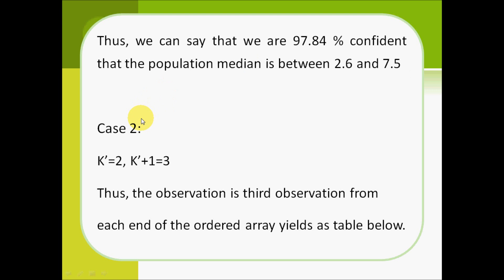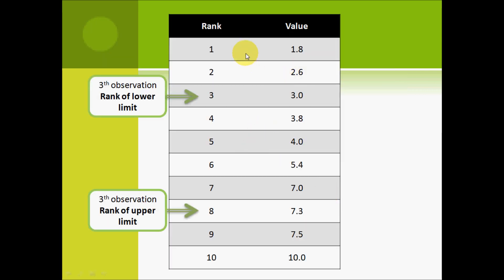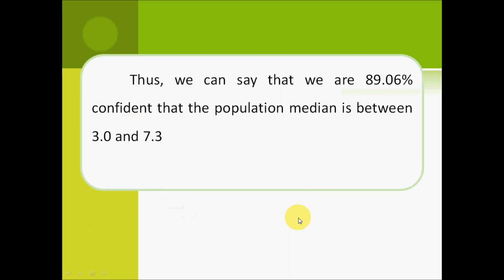For case 2, where k' equals 2, k' plus 1 equals 3. The third observation from each end of the order array is used. The third observation gives the rank of the lower limit, where the value is 3.0. The third observation from the bottom gives the rank of the upper limit, where the value is 7.3. Thus, we are 89.06% confident that the population median is between 3.0 and 7.3.